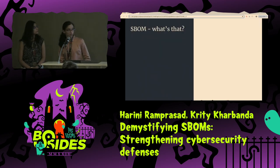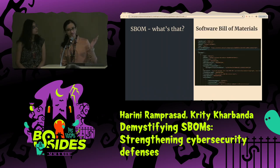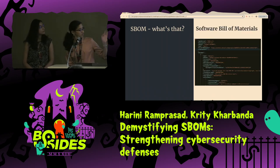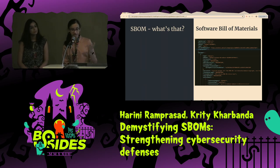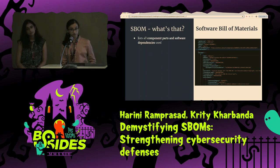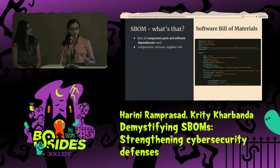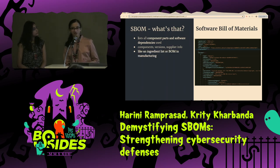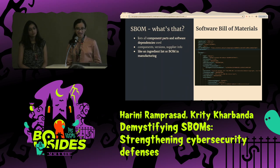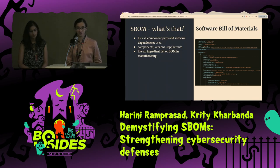Jumping to what is SBOM — it stands for Software Bill of Materials. It basically lists all the component parts and software dependencies used: names of components, the version information, the supplier information if that's available. You can think of it like the ingredient list. If you're going to the supermarket to check out a new snack, you're going to look at the ingredient list and see if there's anything you may want to avoid and make a decision whether it's good for you or not. SBOMs are kind of like that.